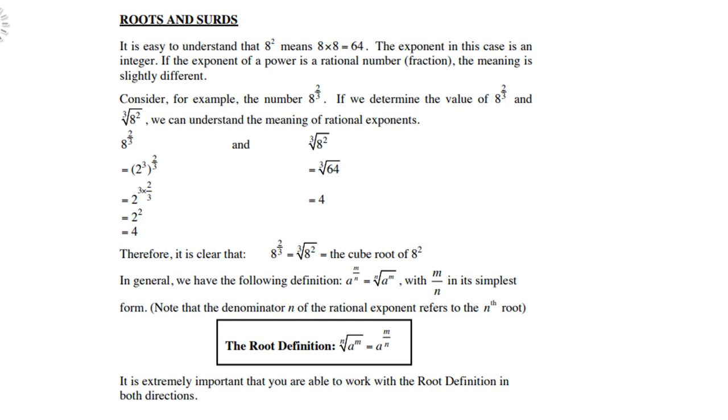Roots and surds. It is easy to understand that 8 to the power 2 means 8 times 8, which is 64. The exponent in this case is an integer. If the exponent of a power is a rational number or fraction, the meaning is slightly different.